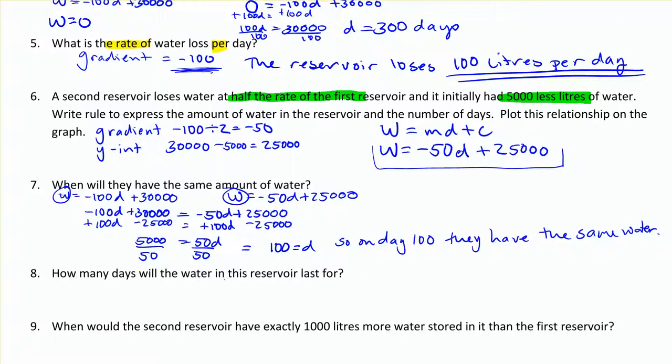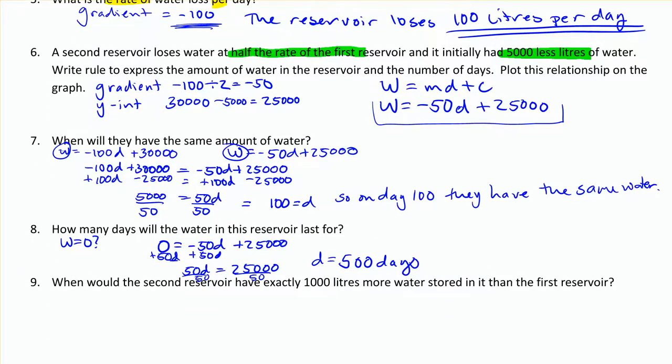How many days will the water in this reservoir last for? This is still the second reservoir. And again, we're asking when will they run out of water, so we're saying when does w equal 0. We can substitute that into that equation: 0 is equal to negative 50 d plus 25,000. Adding 50 d to both sides, we get 50 d is equal to 25,000. Divide by 50 on both sides. We get d is equal to 500 days. So that reservoir will run out of water after 500 days, which is 200 days more than the other reservoir. Kind of makes sense because it's losing water at half the rate.